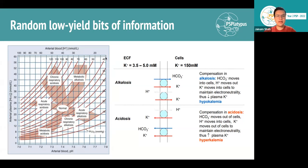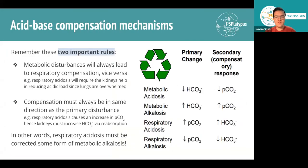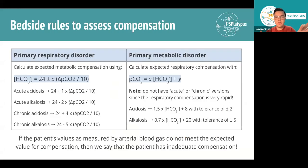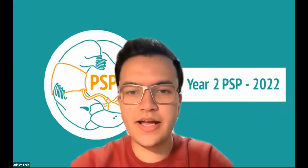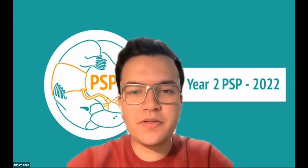That's it for acid-base balance and compensation mechanisms. The main things to remember are the formulas. Print out the formula slides, put them somewhere visible, and commit them to memory — there will likely be at least two or three exam questions on this topic alone. Best of luck for your studies. If you have any questions, reach out to the team. I'll see you in another PS Platypus lecture.